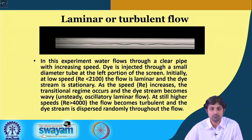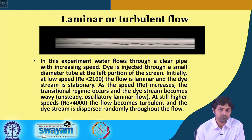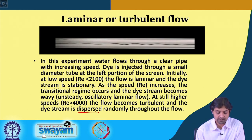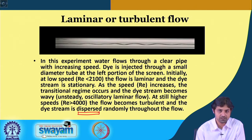If you keep the Reynolds number even higher — greater than 4000 — by increasing the speed, the flow becomes fully turbulent and the dye stream is dispersed randomly throughout the flow. One important property of turbulence is dispersion and mixing. In this video you can see the dye stream dispersed in all directions, clearly indicating what we had learned about laminar and turbulent flow.